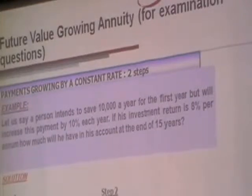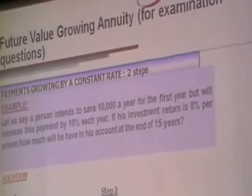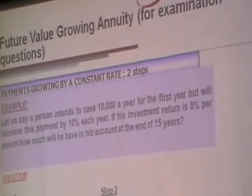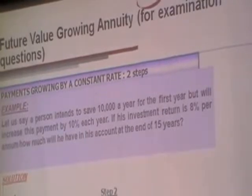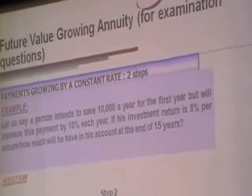Let's say a person intends to save $10,000 a year for the first year, but will increase the payment by 10% each year. If his investment return is 8% per annum, how much will he have in his account at the end of 15 years?